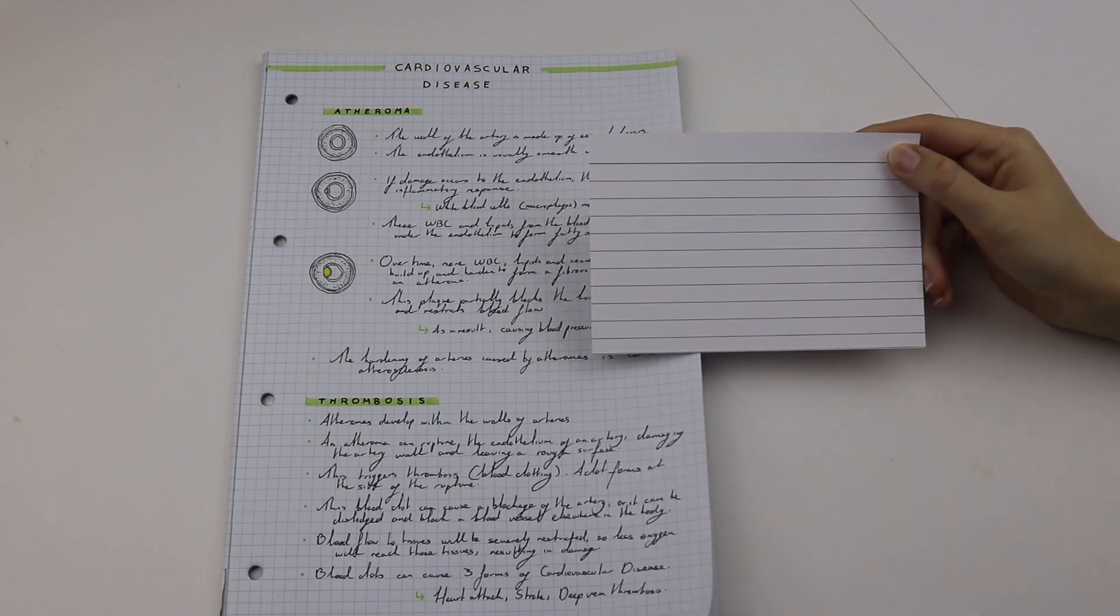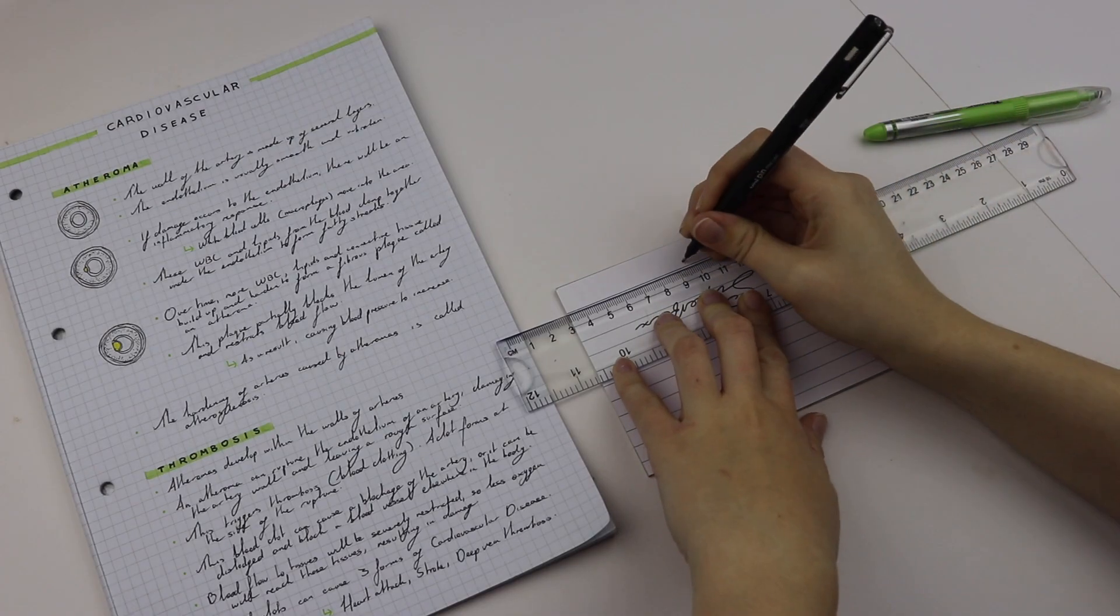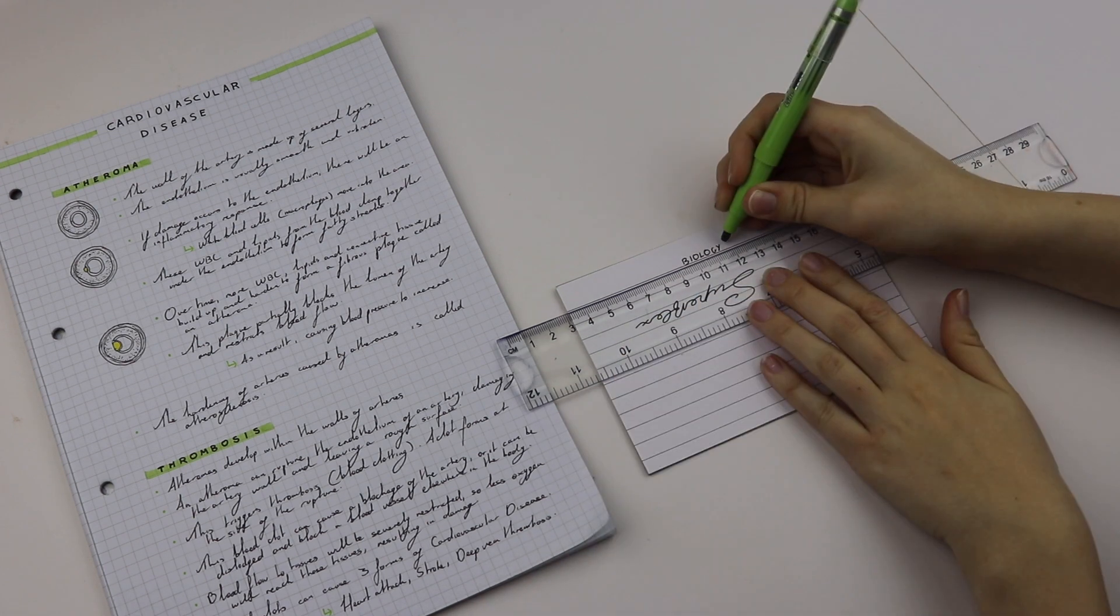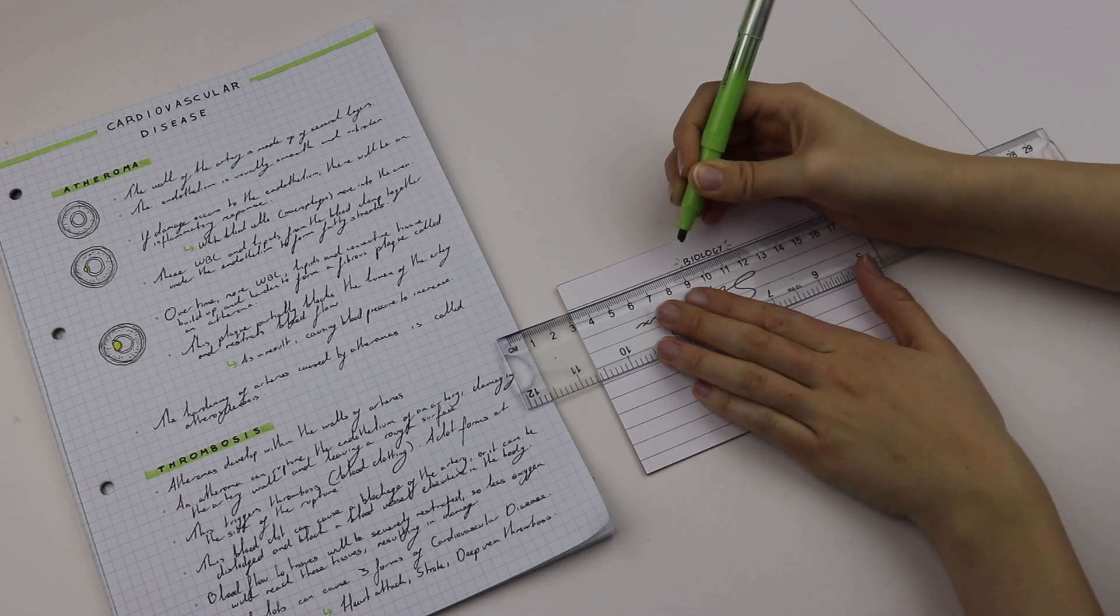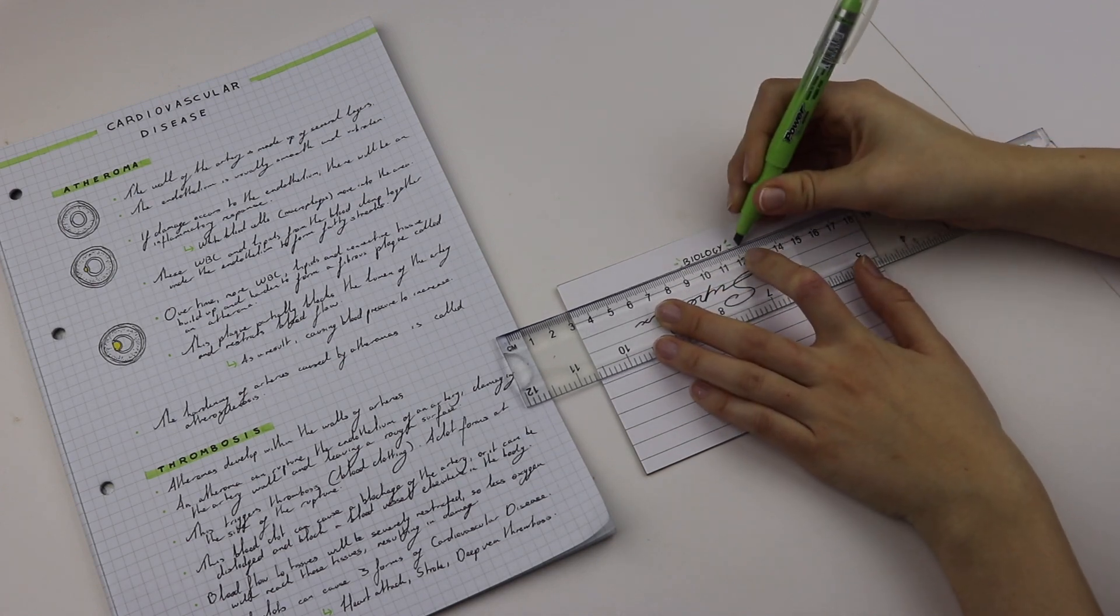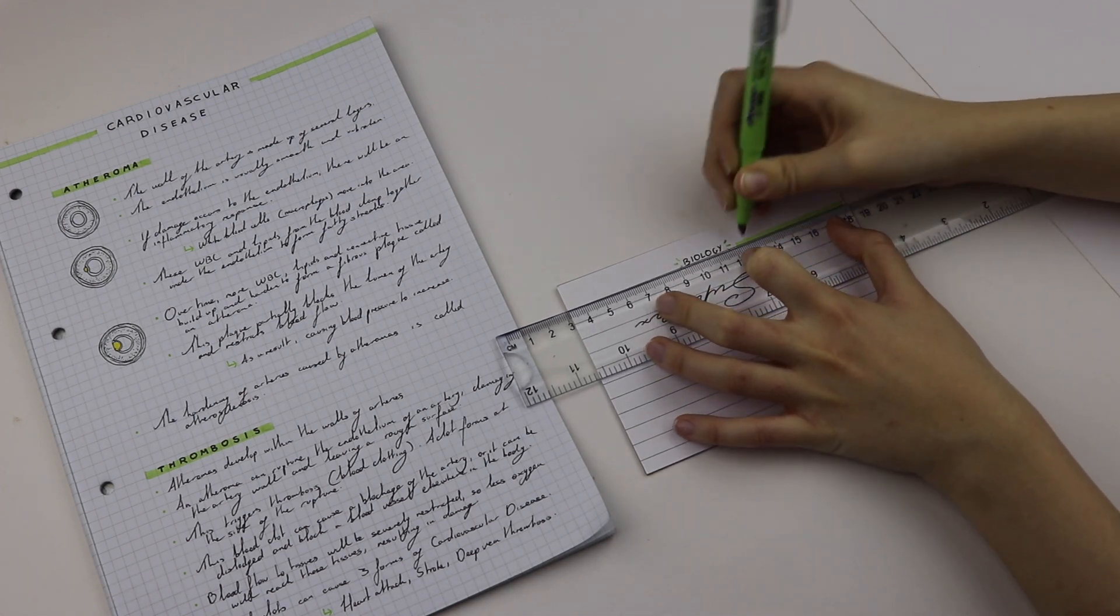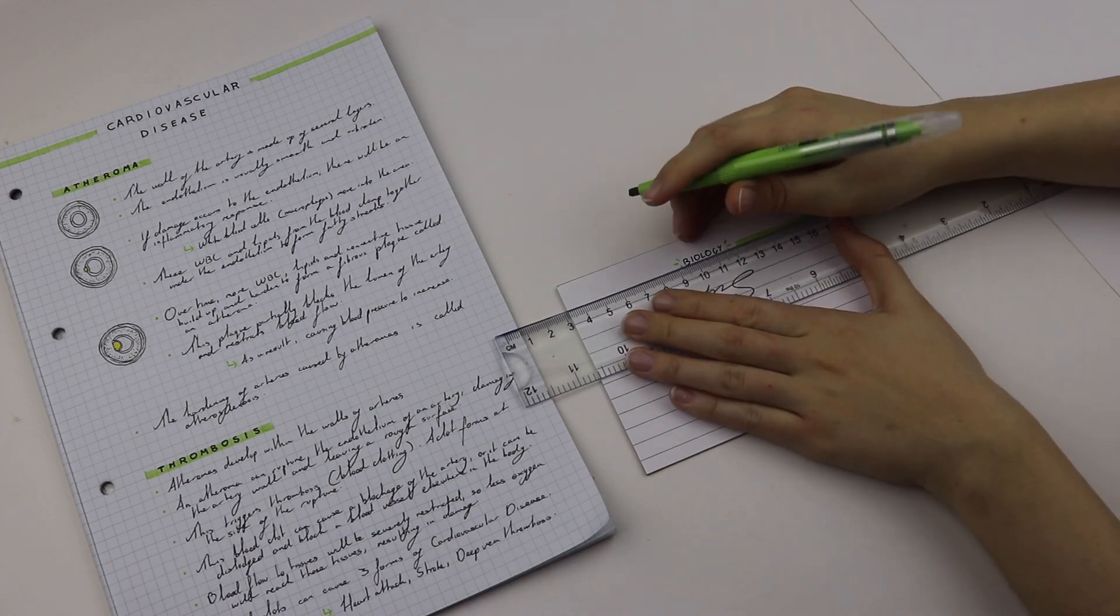So this is a note page that I'm going to be making a flashcard on, and I'll be talking through the whole process with you. First of all, I begin by writing the subject at the top, so this is biology. This just helps me identify all of my flashcards really quickly. I like to make my titles quite simple and minimal so it doesn't take too much time and take up too much space.